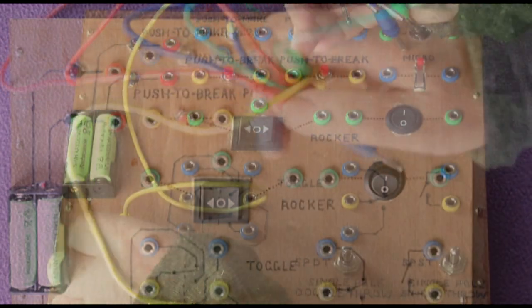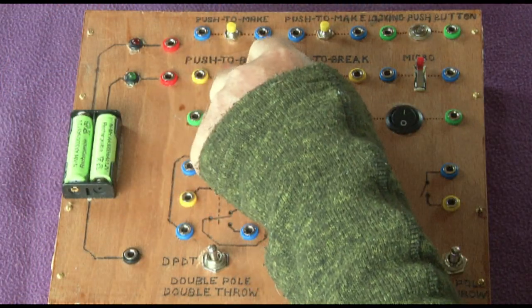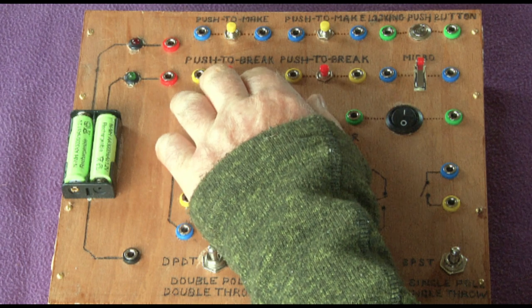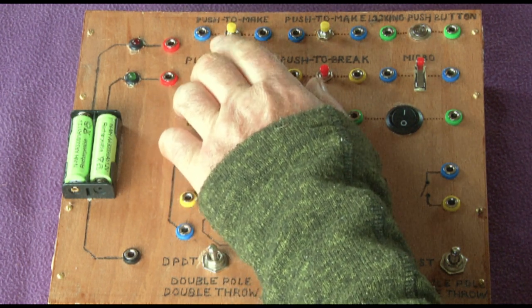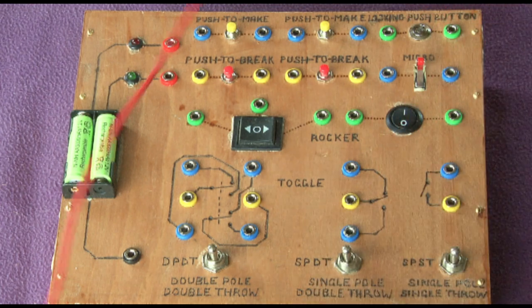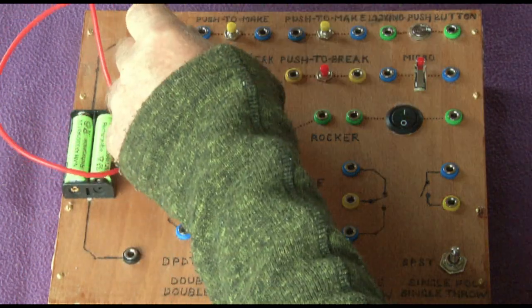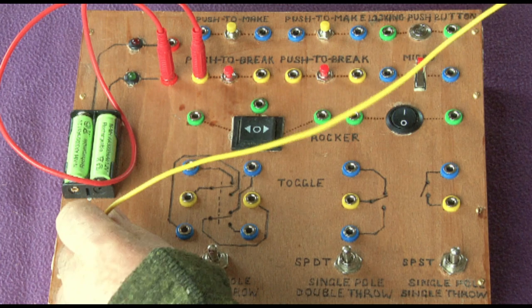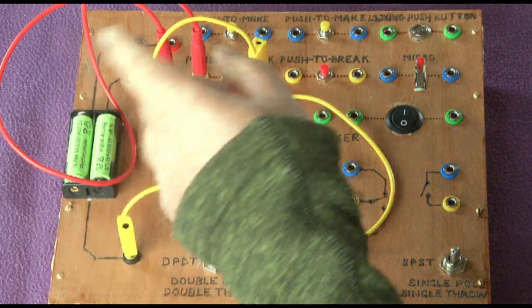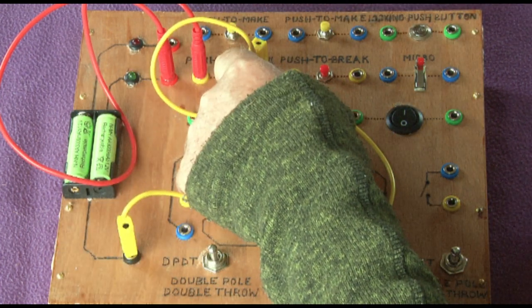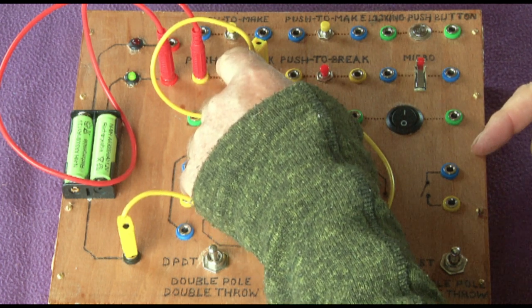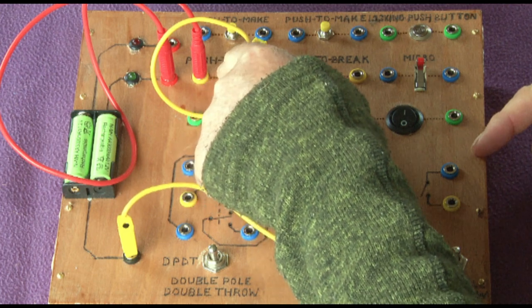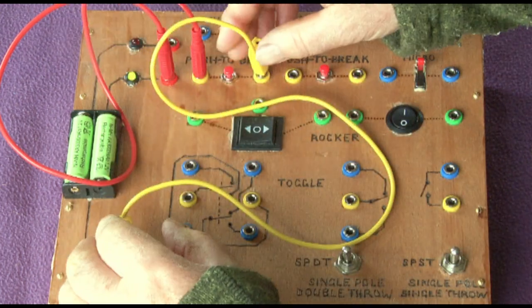Let's just unplug all of those. Here we've got a push-to-break, and that means that the switch is normally connected and it's only when we press it that it's broken. We can see that by wiring it up like this—it's on, when I press it it's stopped. They use this in things like cupboard doors, so when the door is closed the light is off; when you open the cupboard door the light goes on.